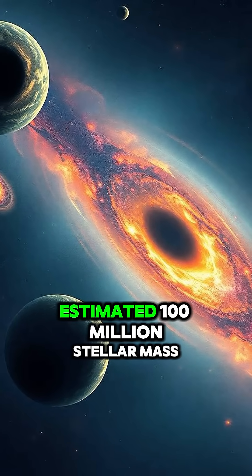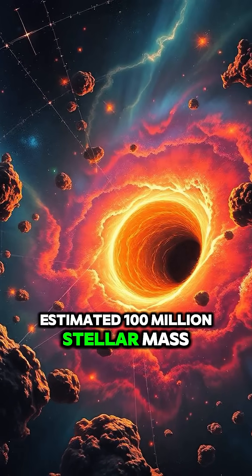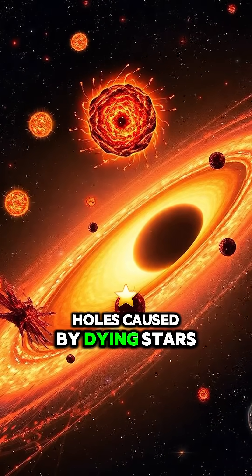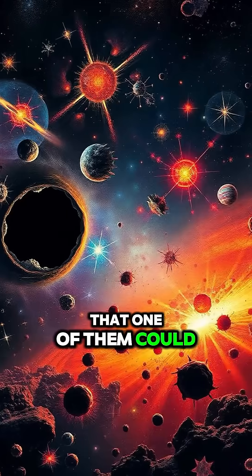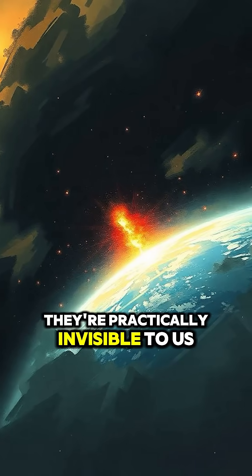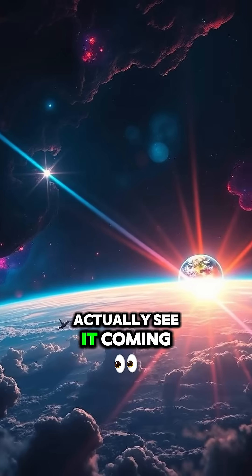In fact, most galaxies have an estimated 100 million stellar mass black holes caused by dying stars. And while it's unlikely that one of them could come crashing through our solar system, they're practically invisible to us. So we would never actually see it coming.